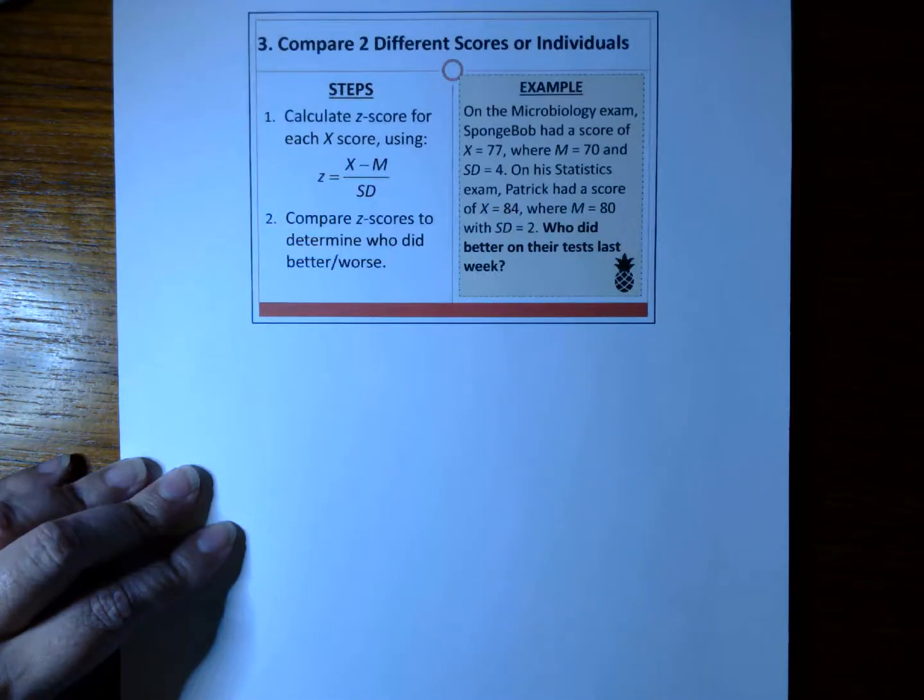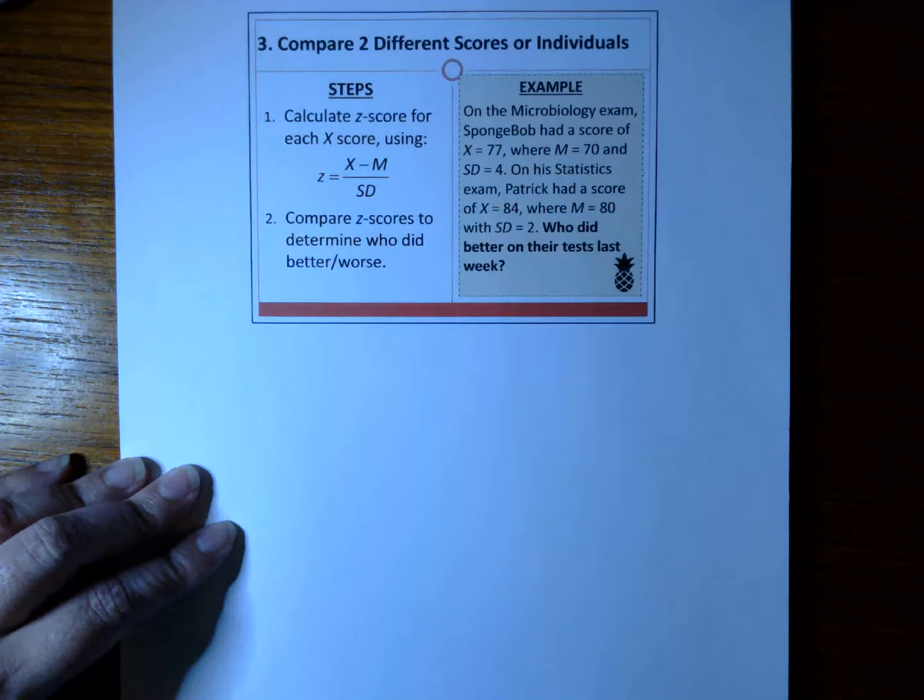At this point, I hope that you're confident in calculating Z-scores, regardless of which formula you use. I want to take it up a notch. Because Z-scores provide a standard scale of measurement, it can be used to compare scores from different types of tests with each other. Basically, Z-scores allow you to compare apples and oranges by converting them to the same type of fruit, let's say pineapples.